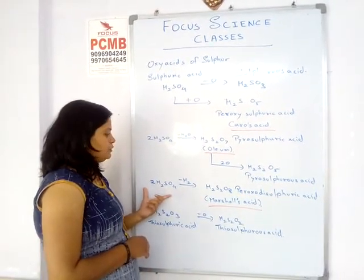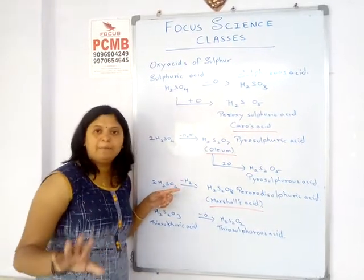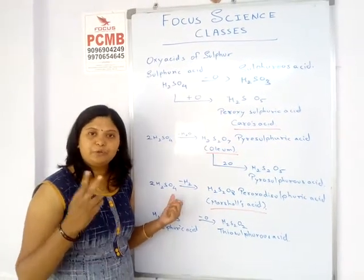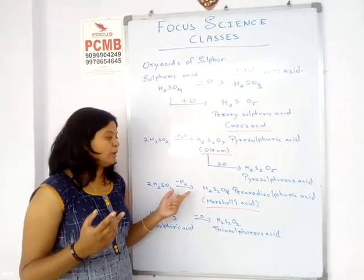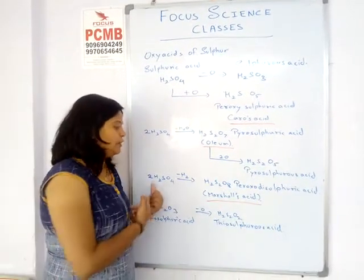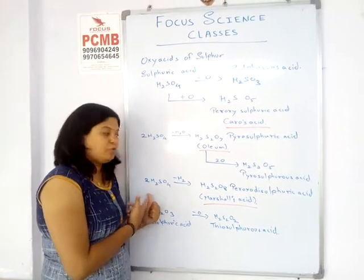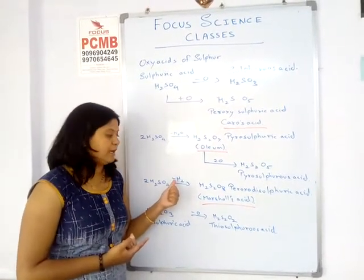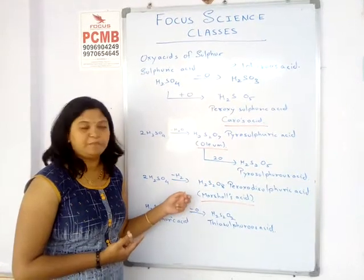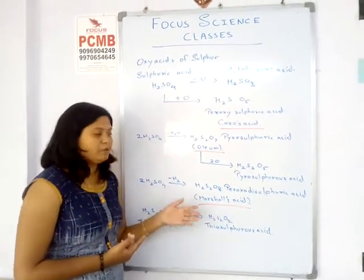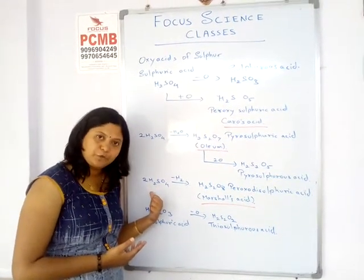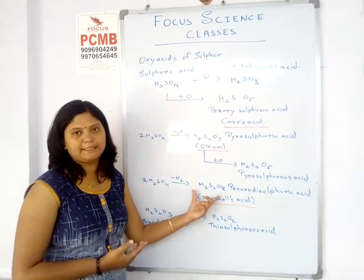Again, take two moles of H₂SO₄ — but this time, instead of removing oxygen, we remove two atoms of hydrogen (H₂). We get peroxodisulfuric acid, also called Marshall's acid. It is called di-sulfuric acid because it is derived from two moles of sulfuric acid. This is very important: Marshall's acid is derived from two moles of H₂SO₄ by removing H₂.